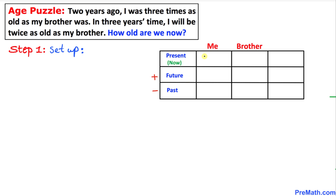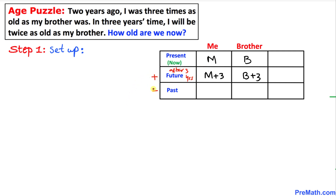For the present tense in the first row, I am going to call m — m stands for me — and b stands for brother. For the future tense, we have three years after, so for me it is going to be m plus three, and for brother it is going to be b plus three. You always put a plus sign in between.